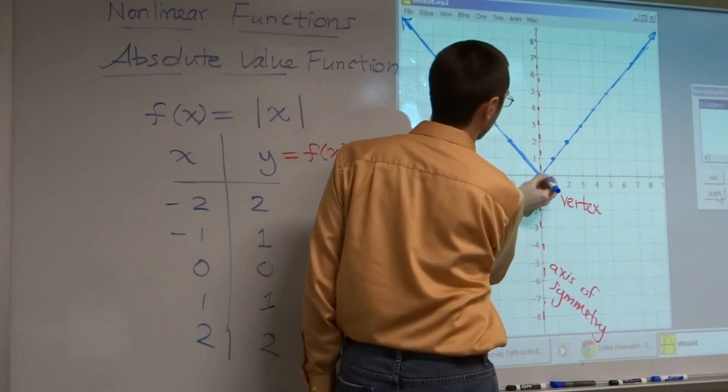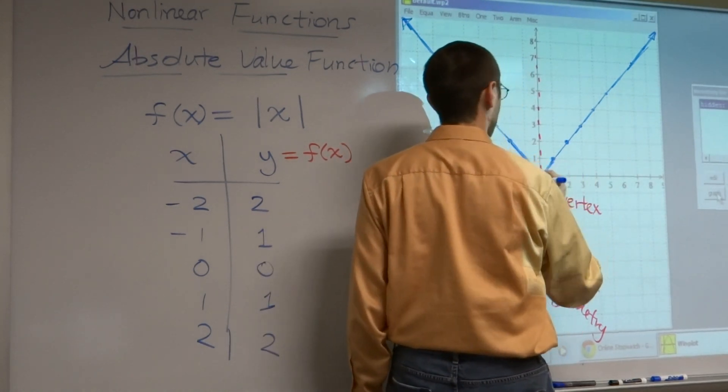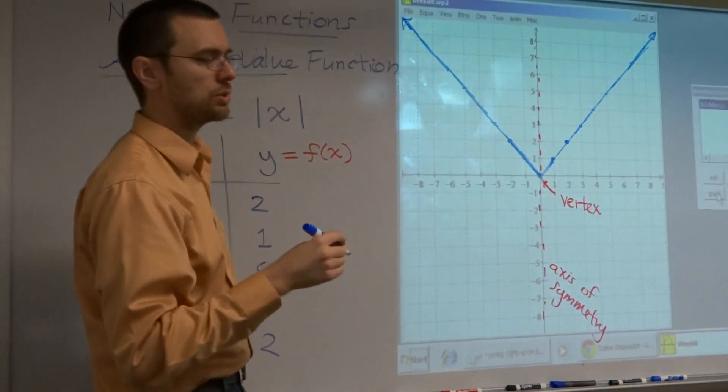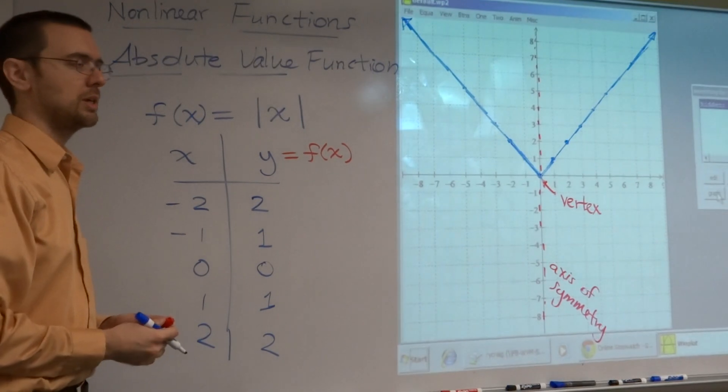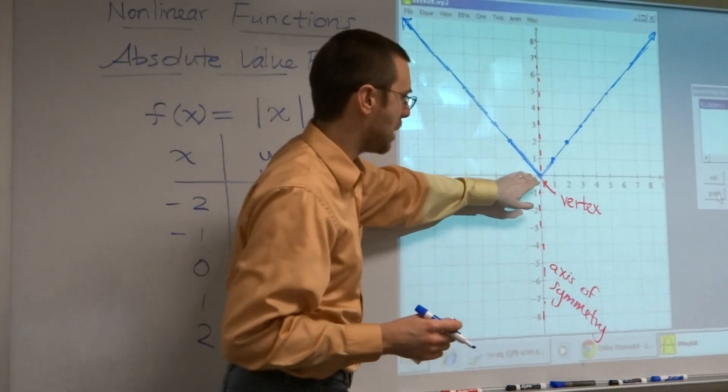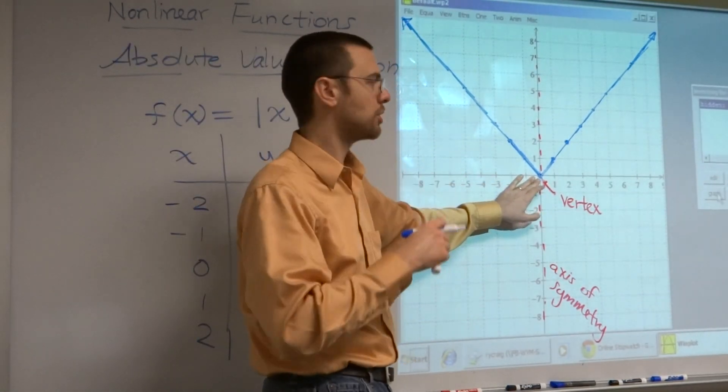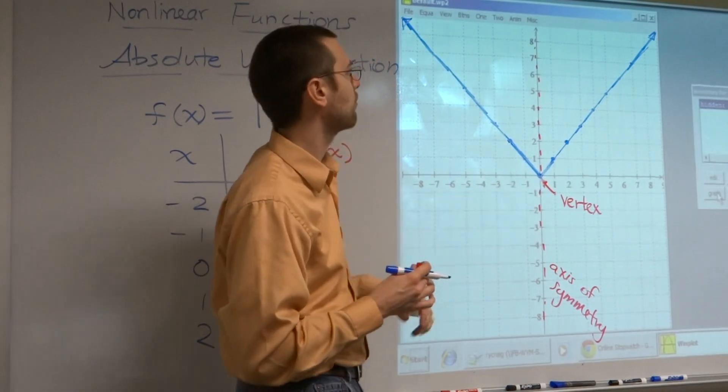Now, when you get down here to the vertex, you're going to have this sharp turn. And that means something very important to us when we get to, say, calculus. Some weird things happen right here whenever you have a sharp turn or a corner.